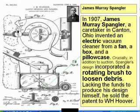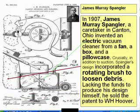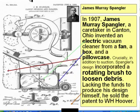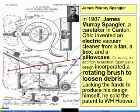Let's look at the very earliest vacuum machine. James Murray Spangler, 1907 — he was a caretaker and he invented an electric vacuum cleaner from a fan, a box, and a pillowcase. Crucially, in addition to suction, Spangler's design incorporated a rotating brush.